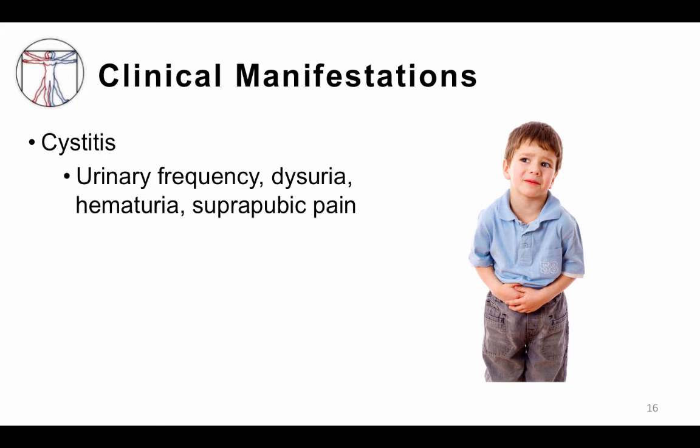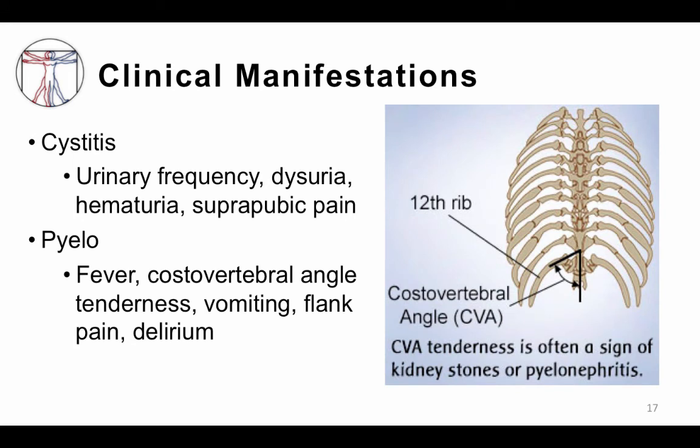Clinical manifestations of cystitis include urinary frequency, dysuria, hematuria, and suprapubic pain. Pyelonephritis can include those symptoms, in addition to fever, costovertebral angle tenderness, vomiting, flank pain, and delirium. The costovertebral angle is pictured at the right, and on exam you can elicit CVA tenderness by tapping your fist in that area.